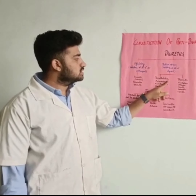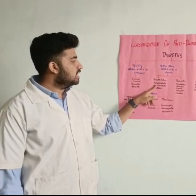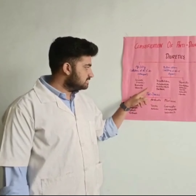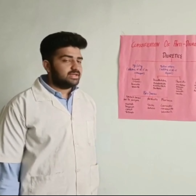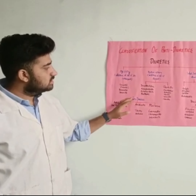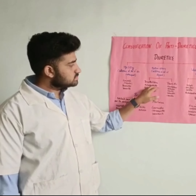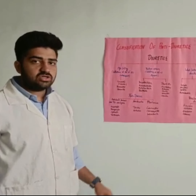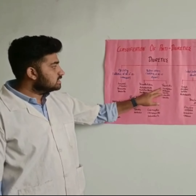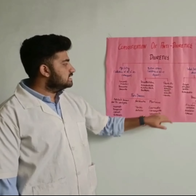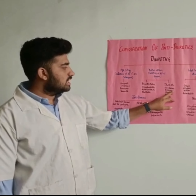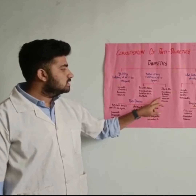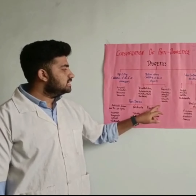Benzothiazide diuretics include hydrochlorothiazide and hydrofluomethiazide. Some of the inhibitors of chlorine transport — thiazide-like agents — are chlorthalidone, metolazone, xipamide.